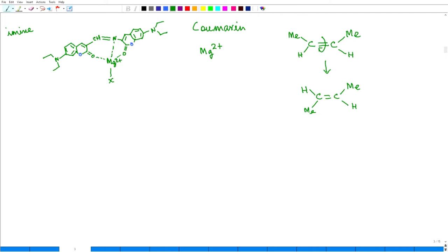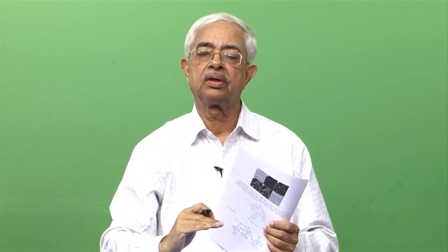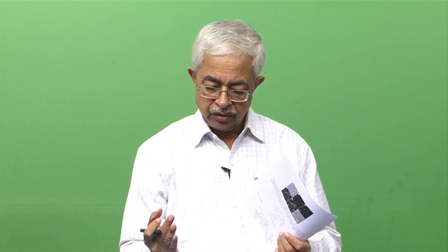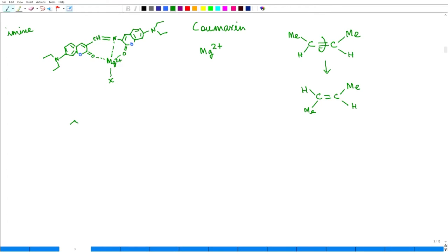Suppose I have this compound. Different types of mechanisms means your first idea is: if I excite, is there any pathway that the molecule can deactivate? That is the question you will ask. If there is any pathway that this excited molecule will come down to the ground state, then no fluorescence you will get. So therefore I have to stop that pathway.